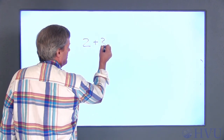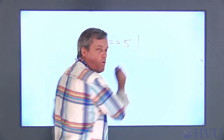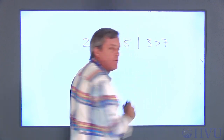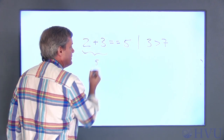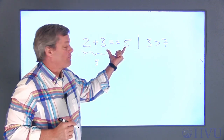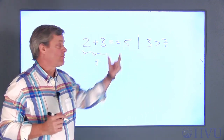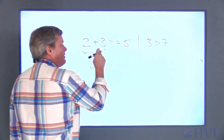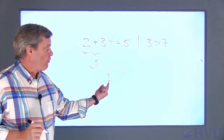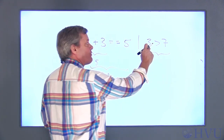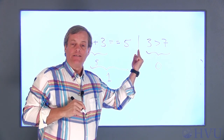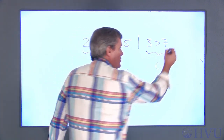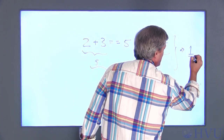For example, in the operation (2+3)==5 | 3>7, the first thing that gets done is the mathematical operation — 2 and 3 are added to get 5. Now we have two relational operators and a logical operator. The relational operators are done first, left to right. We check whether 5==5 — that's true, returning a 1. Then we check whether 3>7 — that's not greater than 7, returning a 0. The last thing evaluated is the logical OR. Since one of the two operands is true, the overall operation returns a 1.